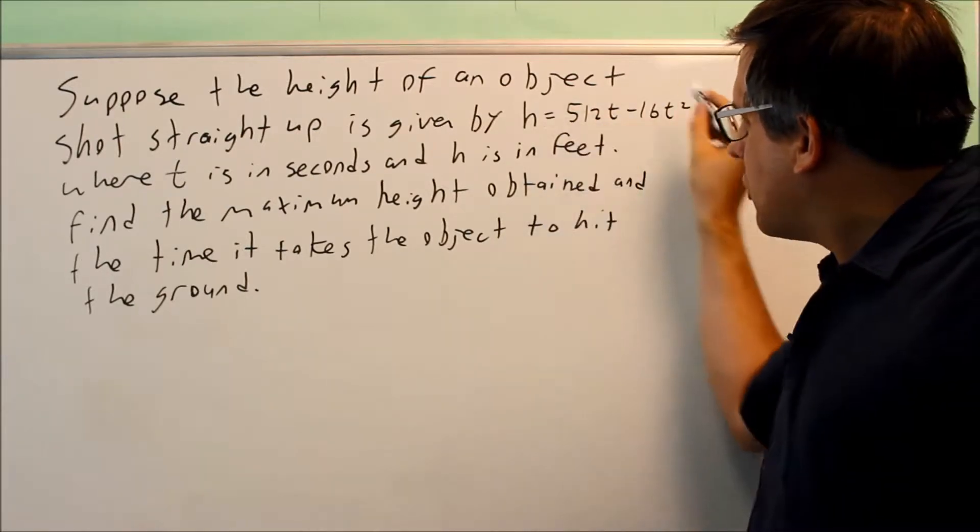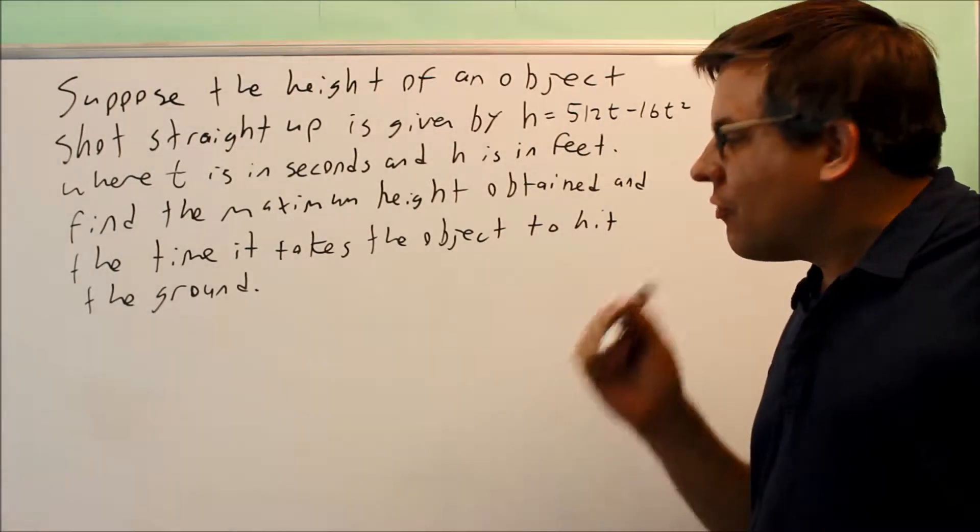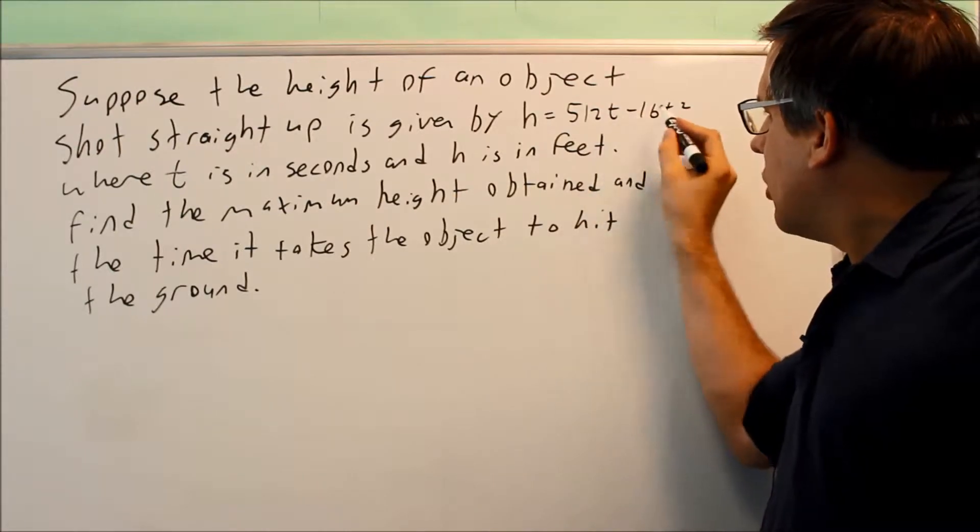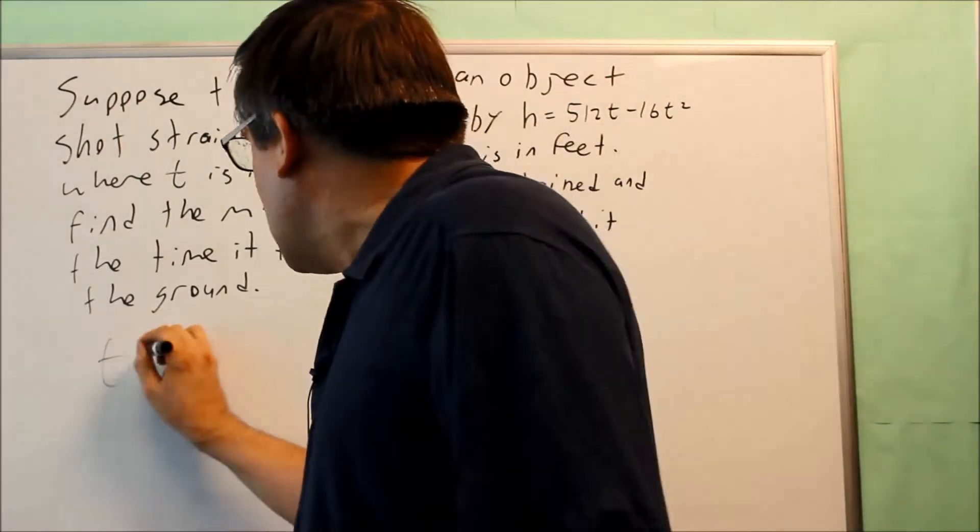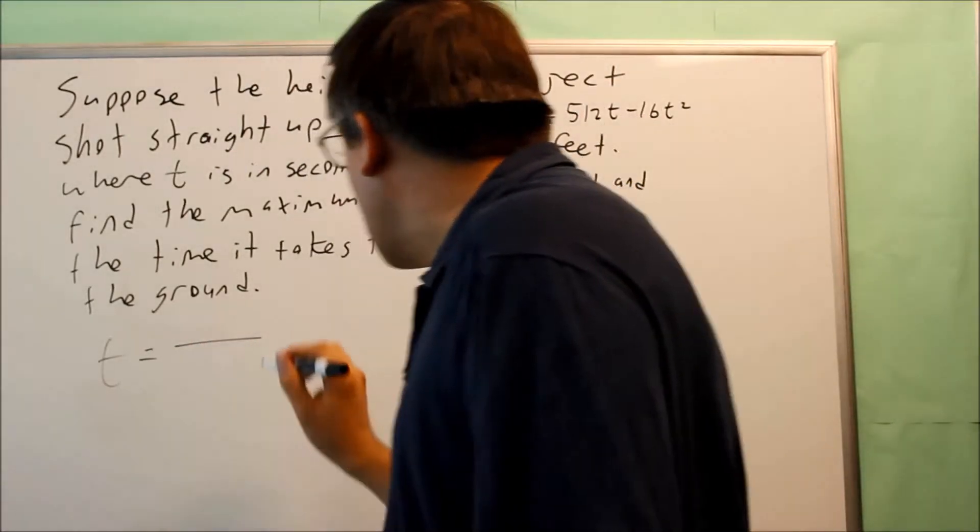Since the variable here is t, that means you'll have t equals negative b over 2a. So in this case, you have the b value. Be careful, the b value is 512.